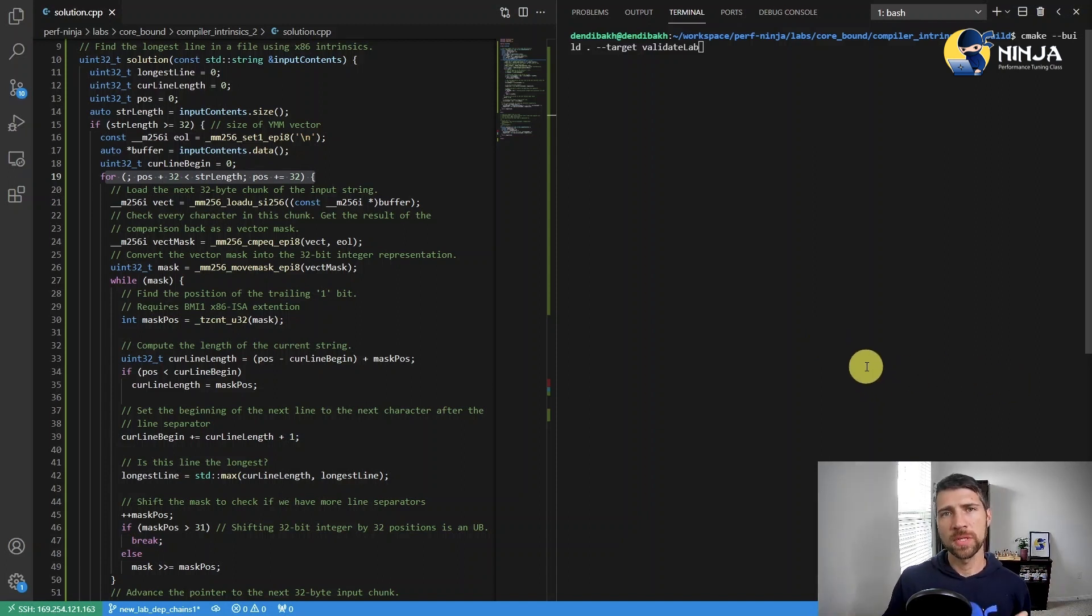Maybe two things I want to point out here is that first I use trailing zero count instead of leading zero count. And it's basically because when we are loading the data from memory, the order of the bytes gets reversed. So I'm basically leveraging that.